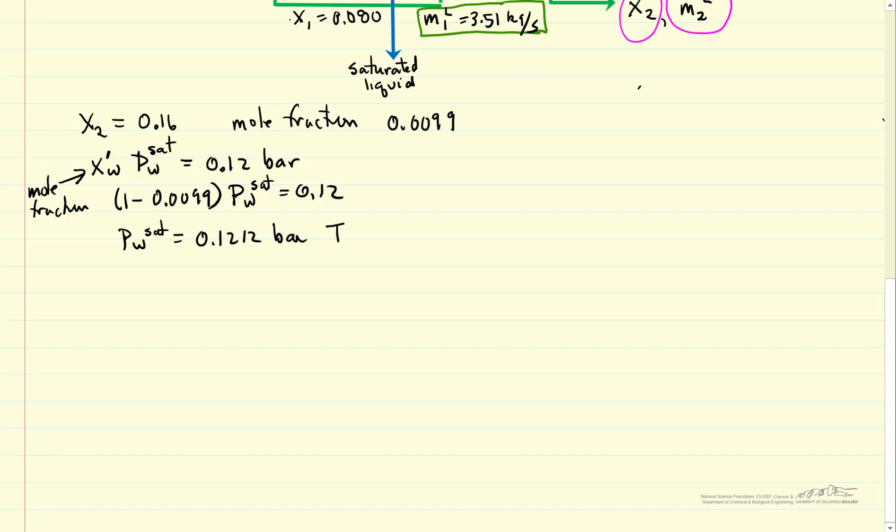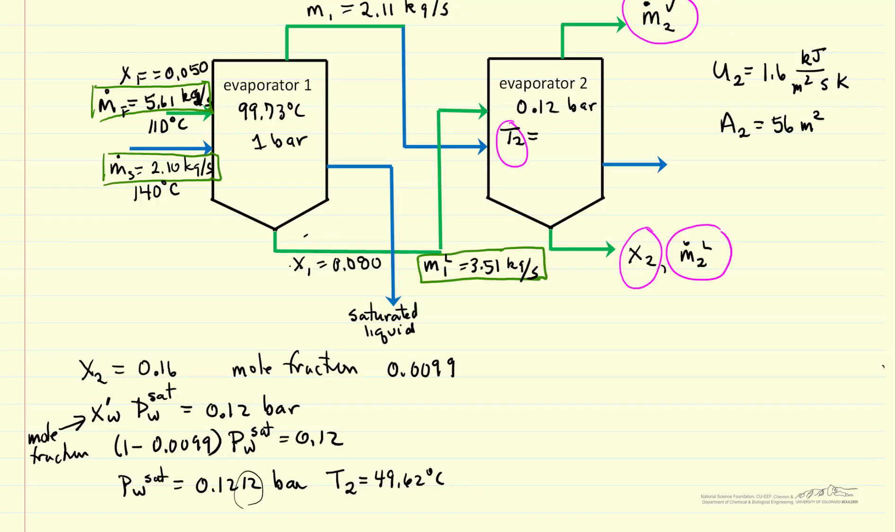And that corresponds to a saturation temperature which is going to be T2, 49.62 degrees C. You can see pretty small correction over the pressure. Approximation of 0.16 is not going to significantly affect our answer.